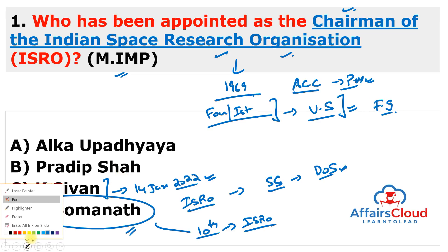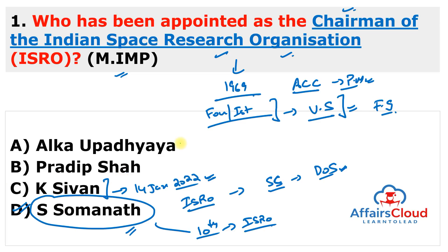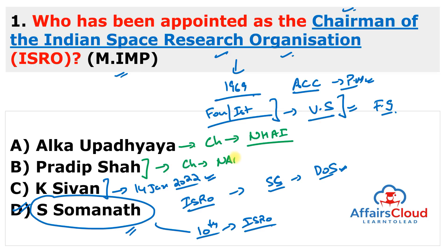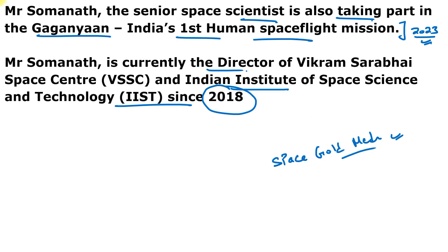Remember the other answer options. Very importantly, Alka Upadhyay was recently appointed as chairman of the National Highway Authority of India. Next is Pradeep Shah, recently appointed as the first chairman of the Bad Bank of India, known as National Asset Reconstruction Company Limited, which was recently created. Remember these two additional appointments.